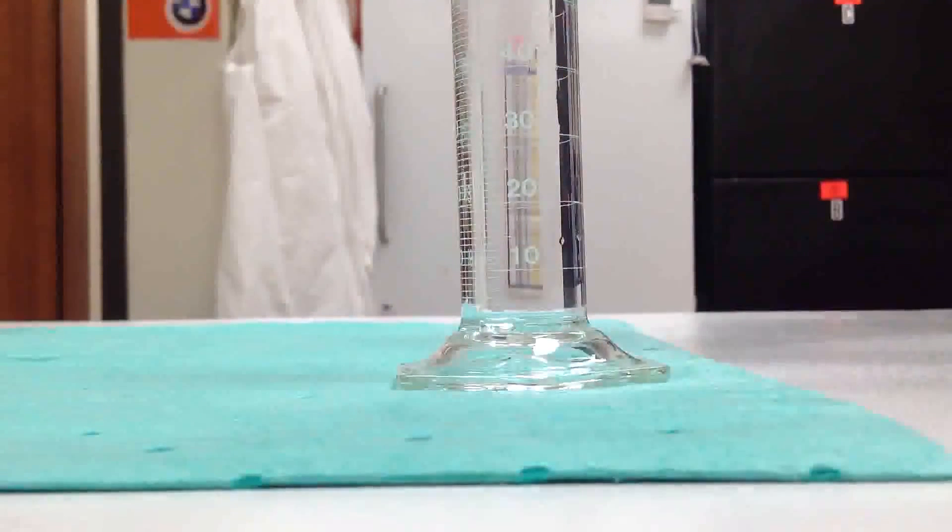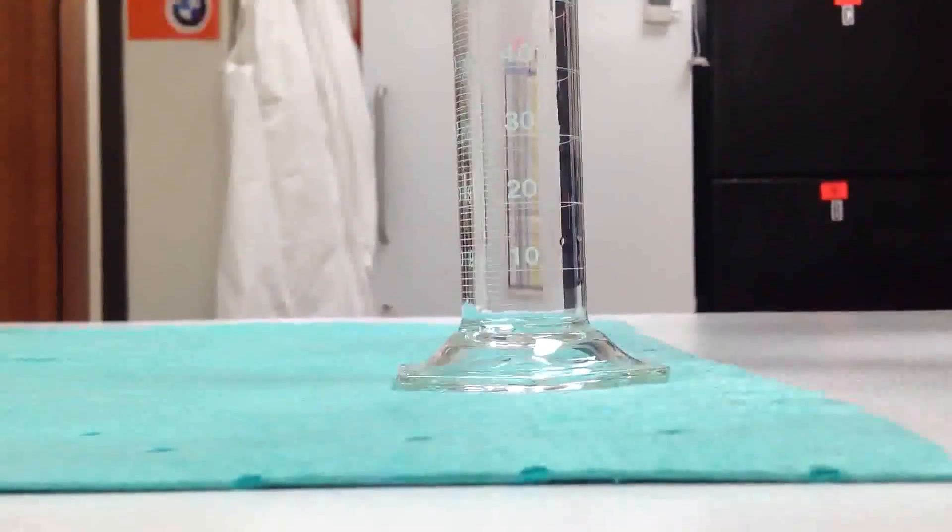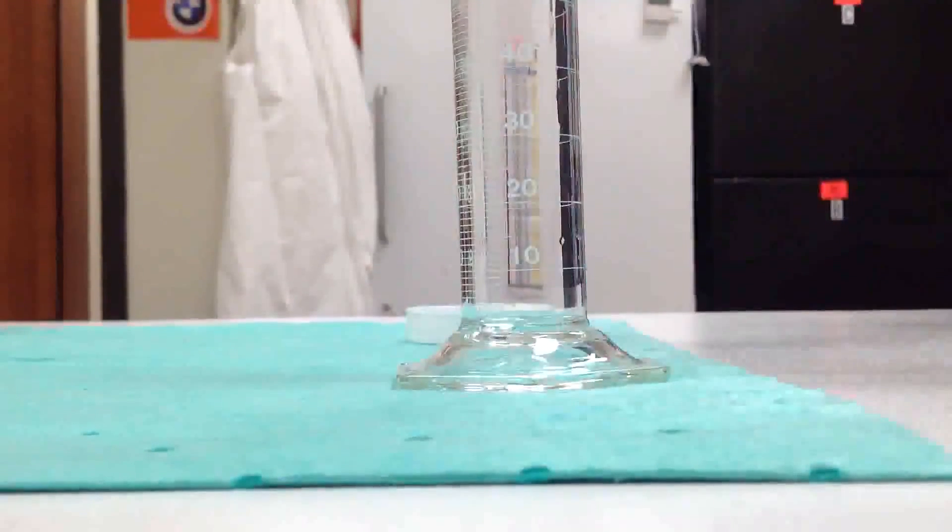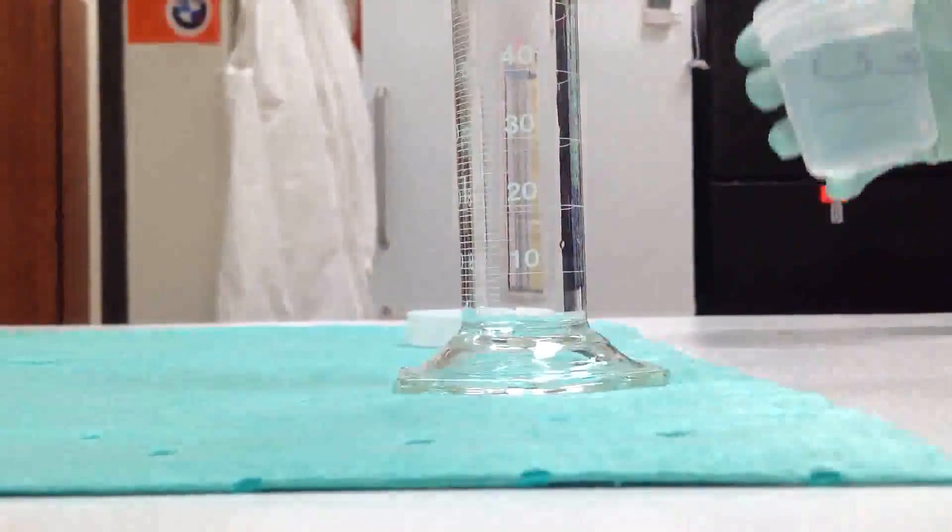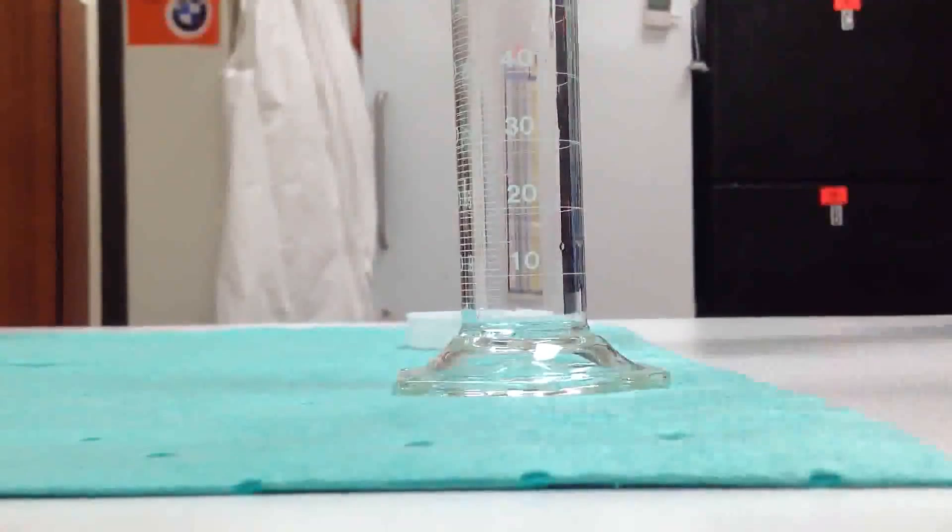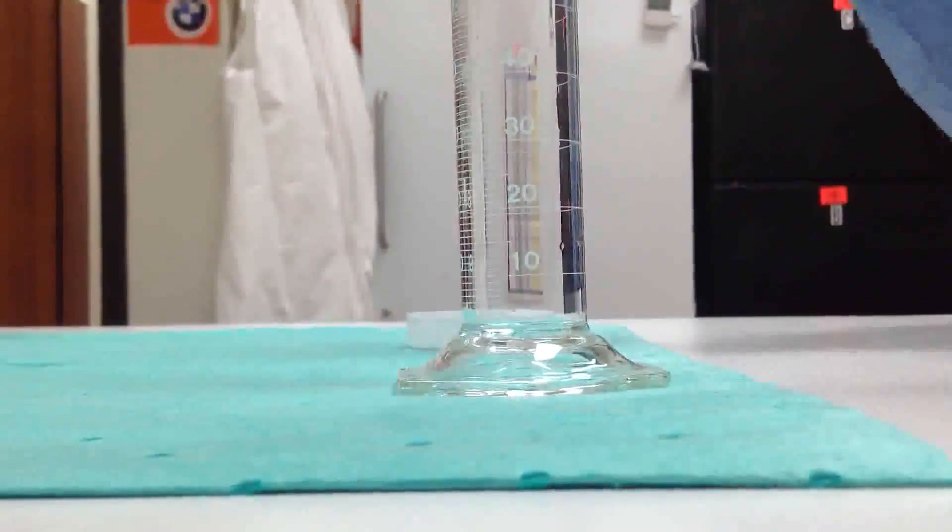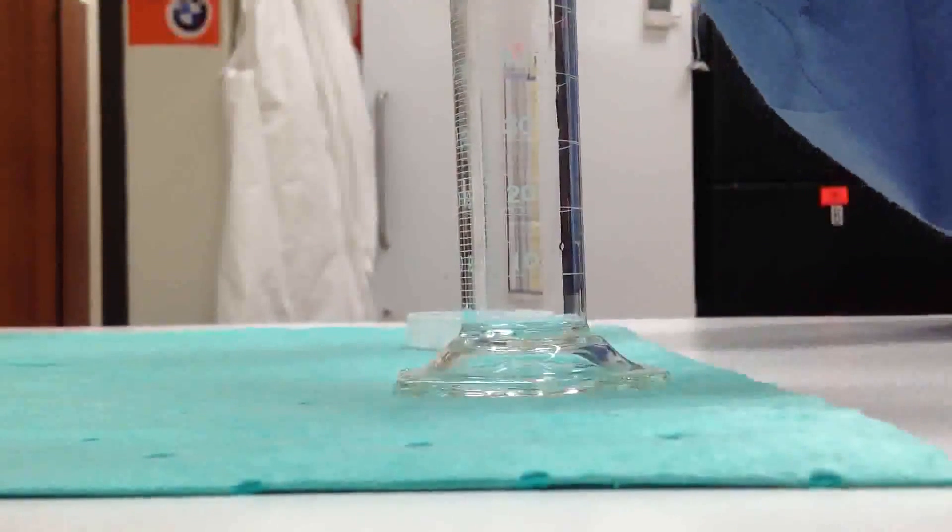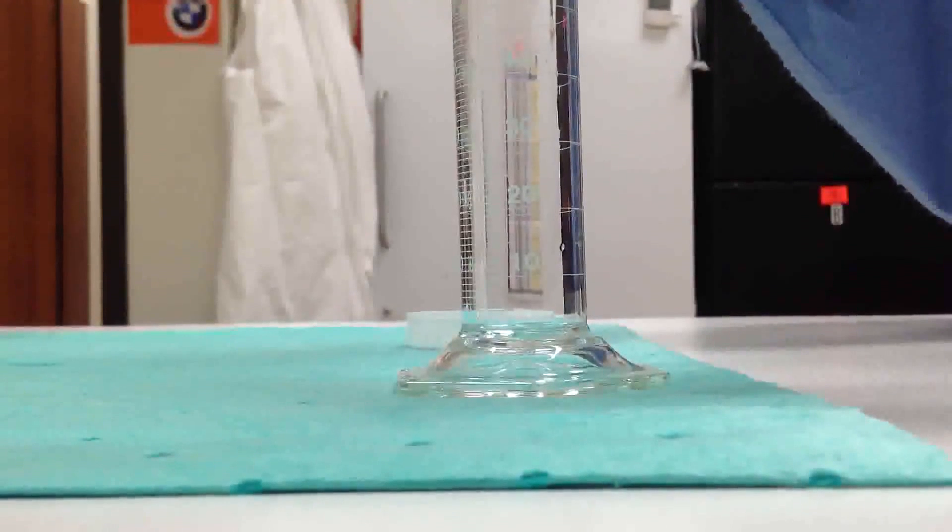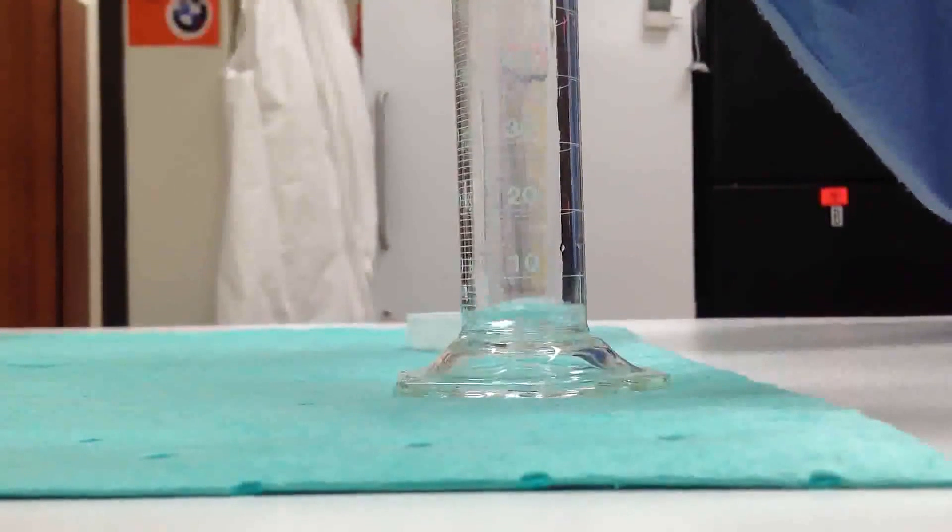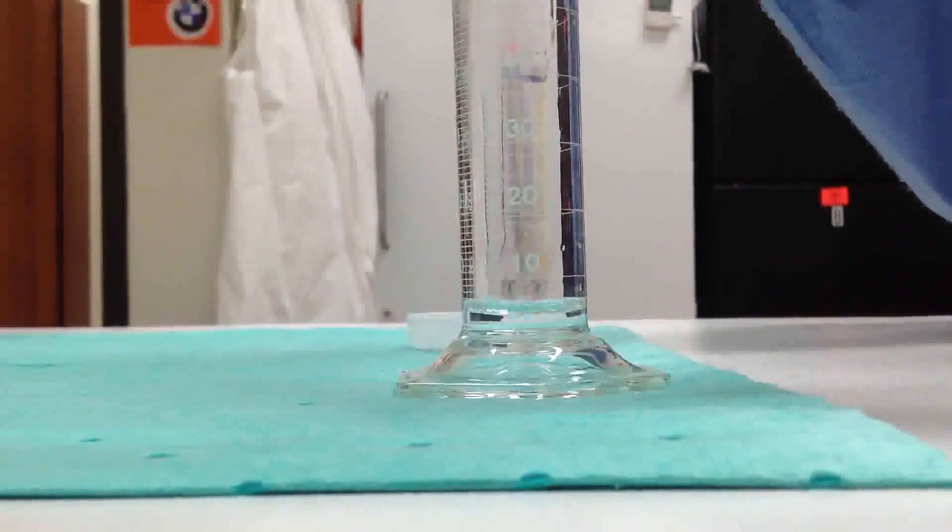You can see the major increments with circles almost all the way around are indicated in groups of 10, with each mark in between for 1 ml. We'll pour the bulk of our solution into the cylinder just slightly below our intended mark.